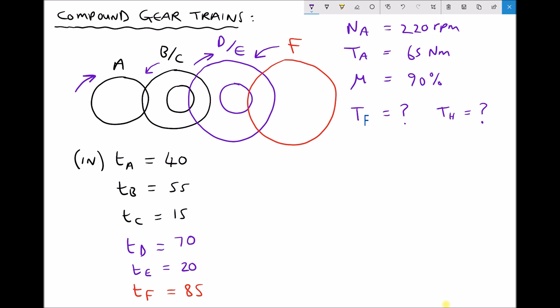Now when we looked at simple gear trains, we had a number of different formulas for things such as gear ratios, input and output speeds and so on. And all of those equations still apply to compound gear trains, with the exception of the calculation for gear ratio. So when we have compound gears, our gear ratio is calculated as follows: gear ratio equals product of driven over product of driver.